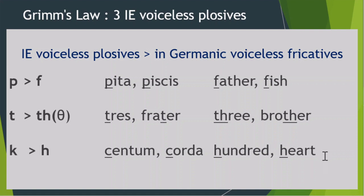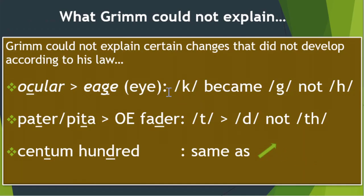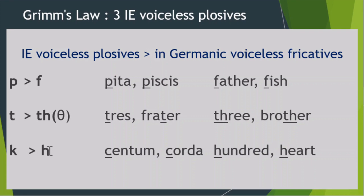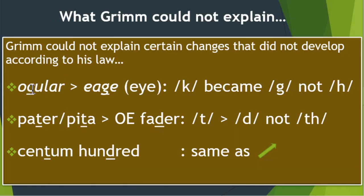Now we look at a few sound changes that were different from how Grimm explained it — they did not seem to work the way he explained. For example, in the word 'ocular' — a Latin, non-Germanic word — the 'k' sound should have become 'h' in Germanic, but we see it became 'g'. Look at the word 'eage', from which modern English 'eye' came — in the Germanic form it is 'g' instead of 'h'. So according to Grimm's Law, 'k' became 'h' in Germanic, but here 'k' becomes 'g'.